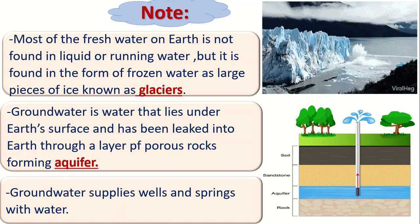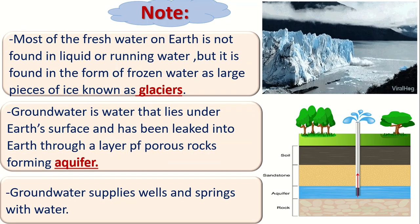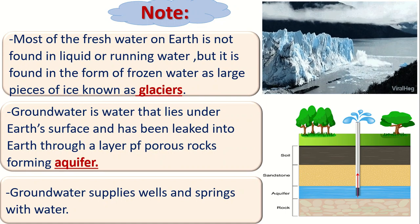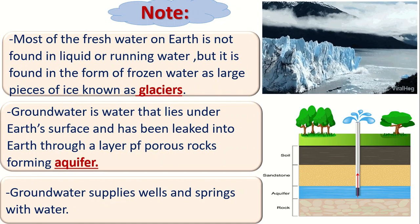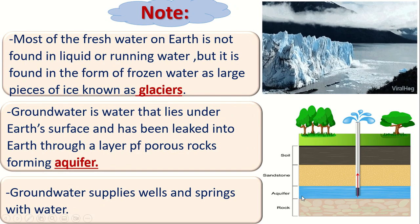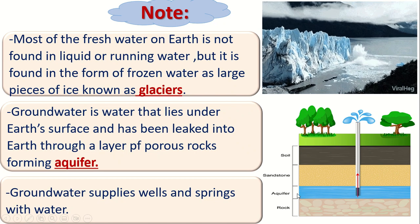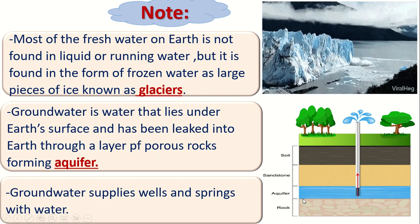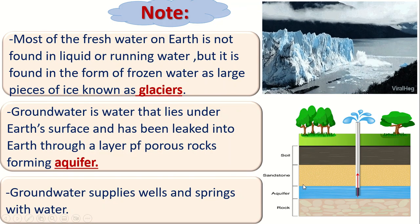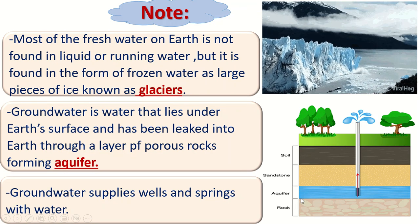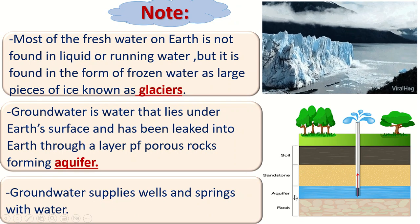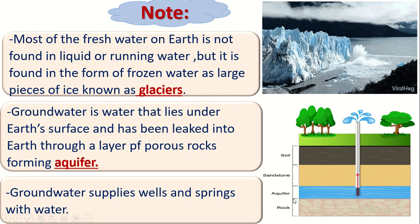The groundwater is also a form of fresh water, found under the Earth's surface. Under the Earth's surface, groundwater is held in a layer called an aquifer. As you can see in this picture, the aquifer is a layer under the Earth's surface that contains fresh water.